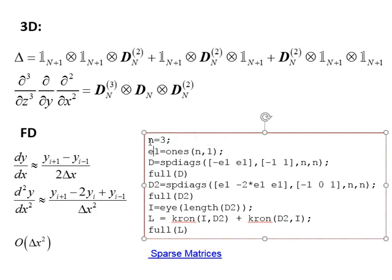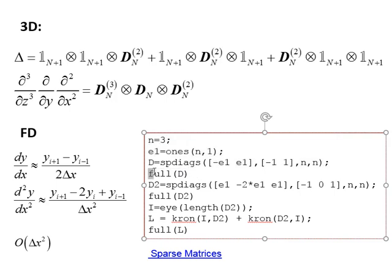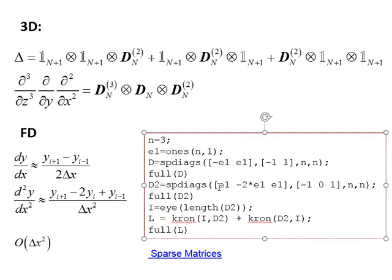We can also use the tensor product with finite differences. For example, with a 3 by 3 matrix, we can take the first derivative as a sparse matrix using the spdiag command and display the full matrix D. For the second derivative, we place 1 on the superdiagonal, -2 on the main diagonal, and 1 on the subdiagonal. We can write both the first and second differentiation matrices as sparse matrices.